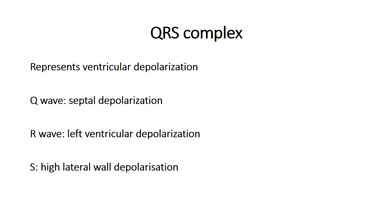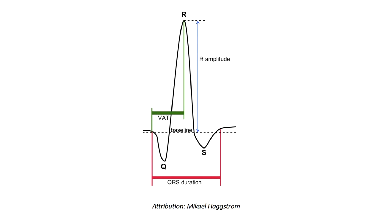After the R wave, you'll see another downward deflection called the S wave. This represents the final part of depolarization of the high lateral wall of the left ventricle, completing ventricular depolarization. To summarize: the Q wave represents septal depolarization, the R wave represents both ventricles but predominantly the left ventricle, and the S wave represents depolarization of the high lateral wall of the left ventricle.